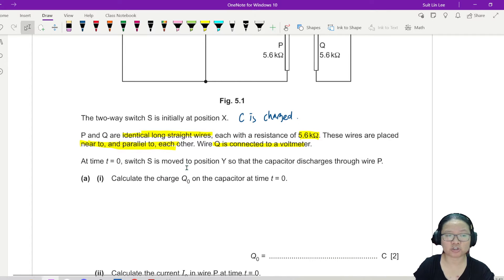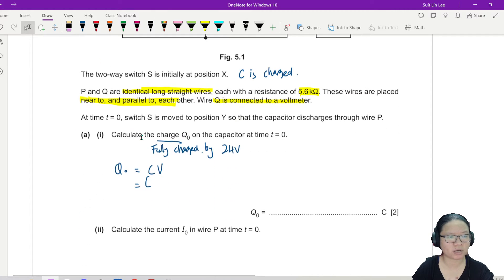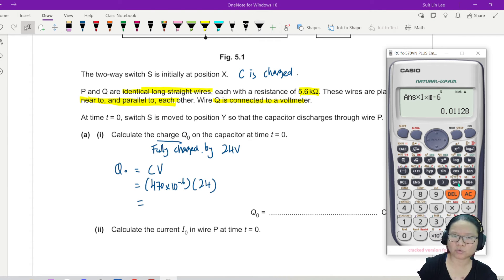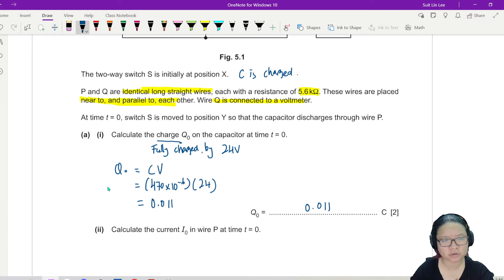Calculate the initial charge Q₀ on the capacitor at t equal to zero. So the initial charge is when the capacitor is fully charged by this 24 volt battery. I can just write Q₀ is CV, and the capacitance was 470 microfarad times 0.024. That gives us 0.01128 coulombs, sticking to 2 significant figures because all the values given are 2 SF.